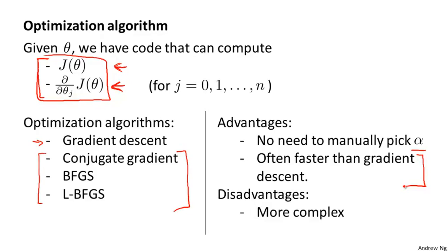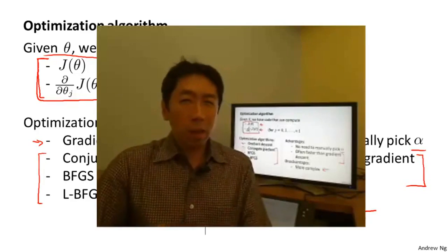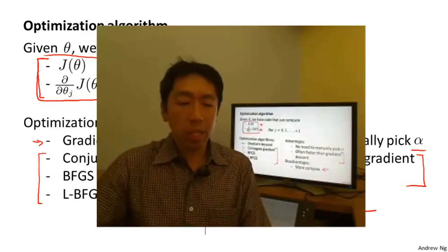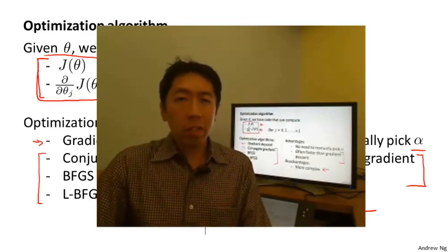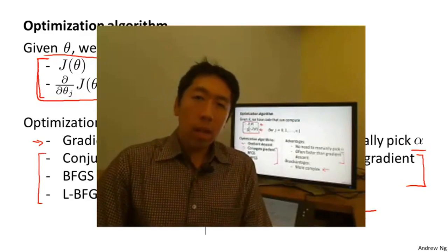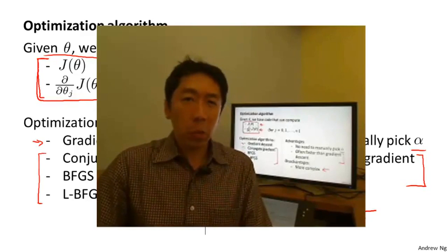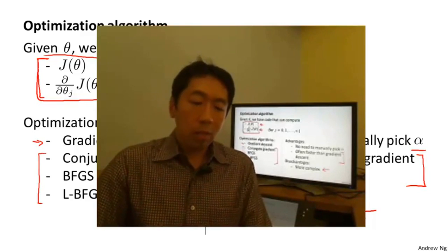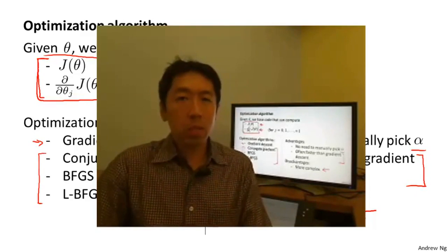It is entirely possible to use these algorithms successfully and apply them to many different learning problems without actually understanding the inner loop of what they do. If these algorithms have a disadvantage, it's that they're quite a lot more complex than gradient descent. In particular, you probably should not implement conjugate gradient, L-BFGS, or BFGS yourself unless you're an expert in numerical computing. Instead, just use a software library. Just as you wouldn't write your own code to compute square roots or matrix inverses, for these algorithms I would recommend you just use a software library.